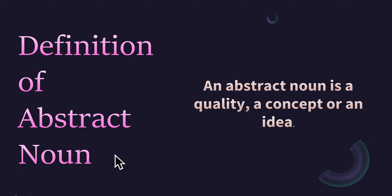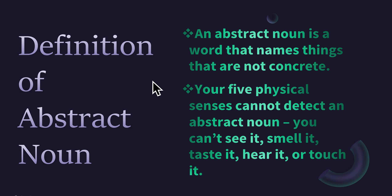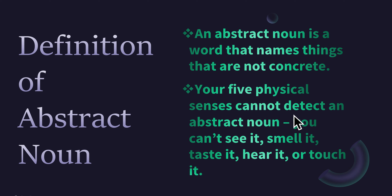Definition of abstract noun: an abstract noun is a quality, a concept, or an idea. An abstract noun is a word that names things that are not concrete. Your five physical senses cannot detect an abstract noun — you can't see it, smell it, taste it, hear it, or touch it.